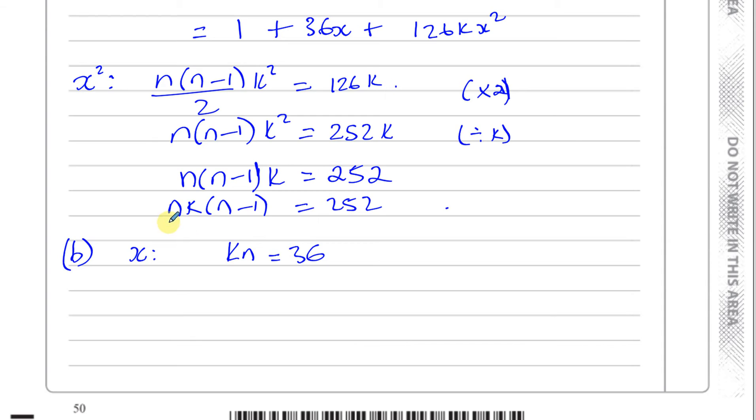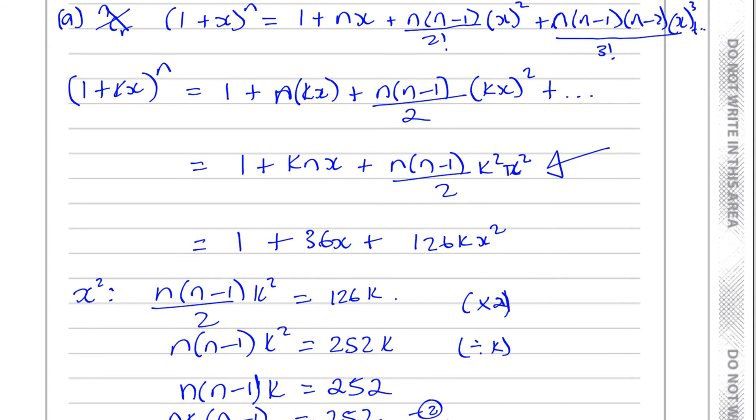Okay, kn must equal 36. So, I can replace the nk here with 36. I can take this 36 and substitute, I can say this is one equation, and this is equation 2, and I can replace the n times k with 36. So, here I have 36 times n minus 1 is equal to 252. So, I can use this to find what n is. Why does kn equal 36? Okay, because if you look at the x terms of our expansion, and what they gave us, the coefficient of x is 36 in what they gave us, and in our expansion, the coefficient of x is kn, so n times k must be 36.